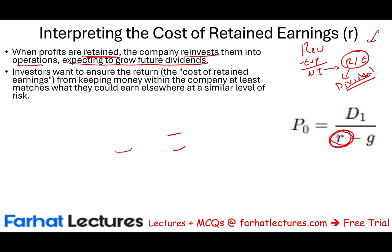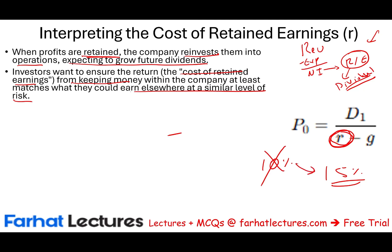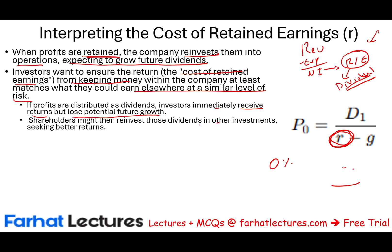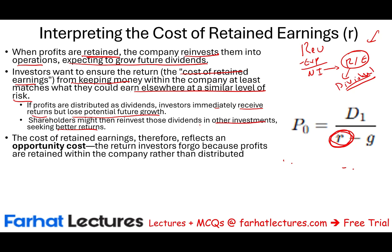Investors want to make sure the return — the cost of keeping retained earnings within the company — at least matches what they could earn elsewhere at a similar risk level. If you want to earn 10% and NVIDIA can earn 15%, you keep it; you forego the 10% and let them earn the 15%. But if profits are distributed as dividends, investors immediately receive return but lose potential growth. Shareholders might reinvest dividends elsewhere and may or may not get a better return. So the cost of retained earnings reflects an opportunity cost — the return investors forego because profits are retained rather than distributed.